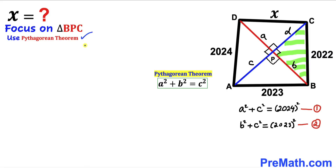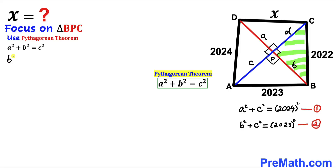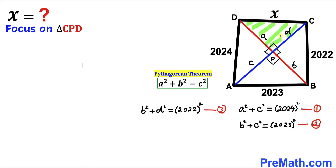Now let's focus on right triangle BPC and apply the Pythagorean theorem. The hypotenuse is 2022 and the two legs are b and d. Filling in gives us b² + d² = 2022². I'll call this equation number three.